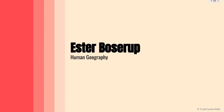Hey guys, welcome back to A-level lessons. In this video we're going to be looking at our population theorists again, covering our next theorist who is going to be Esther Boserup. She's going to be the second one before we conclude with David Harvey in the next part. Previously we talked about Thomas Malthus — go check it out if you have not already done so; I'll leave a link in the description below.